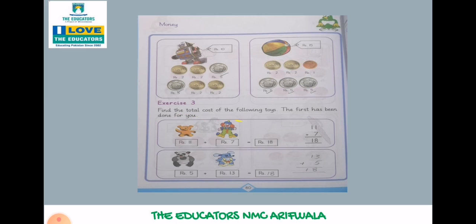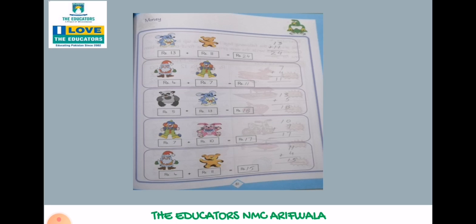Find the total cost of the following choice. The first one has been done for you. In choice की cost को हम plus करेंगे: 11 plus 7 is 18. 7 में 1 plus करेंगे, 8 and 1 is 18. 5 plus 13 is 18. 5 में 3 plus करेंगे, 8 and 1 is 13. Then 15 plus 11 is 24.